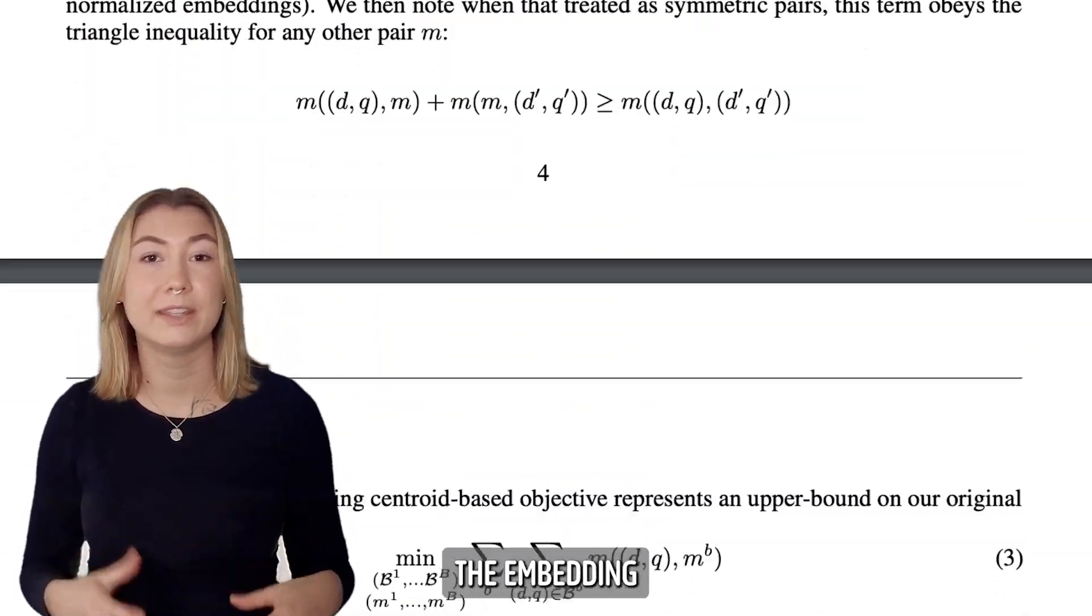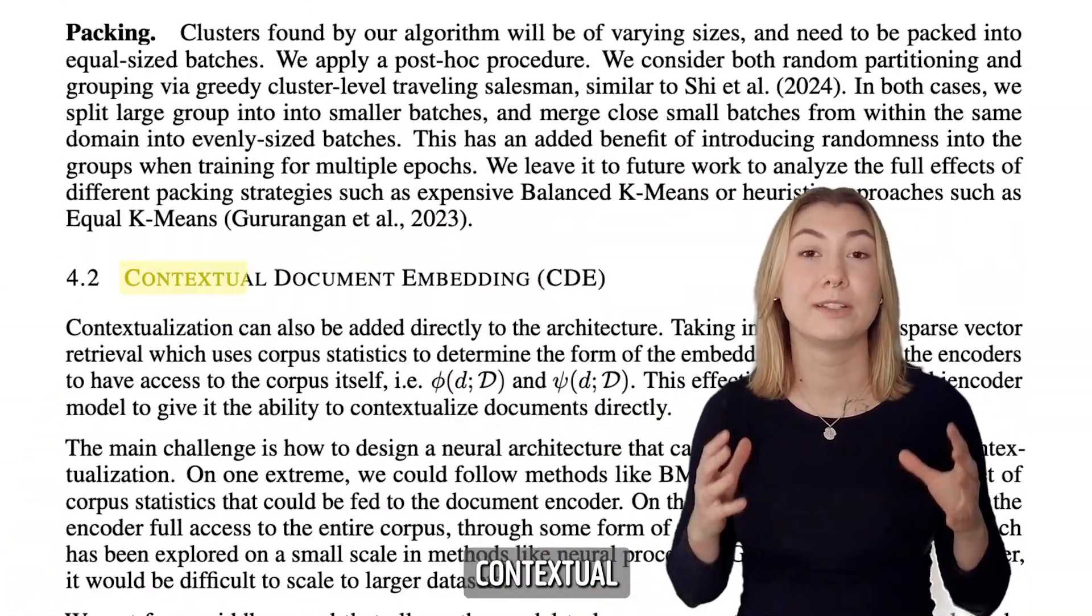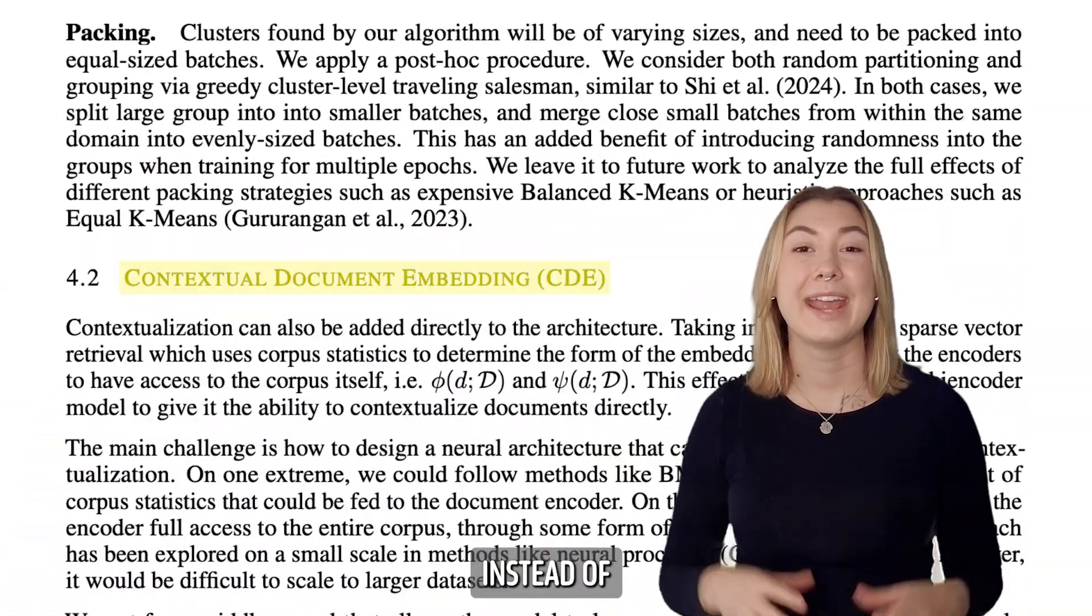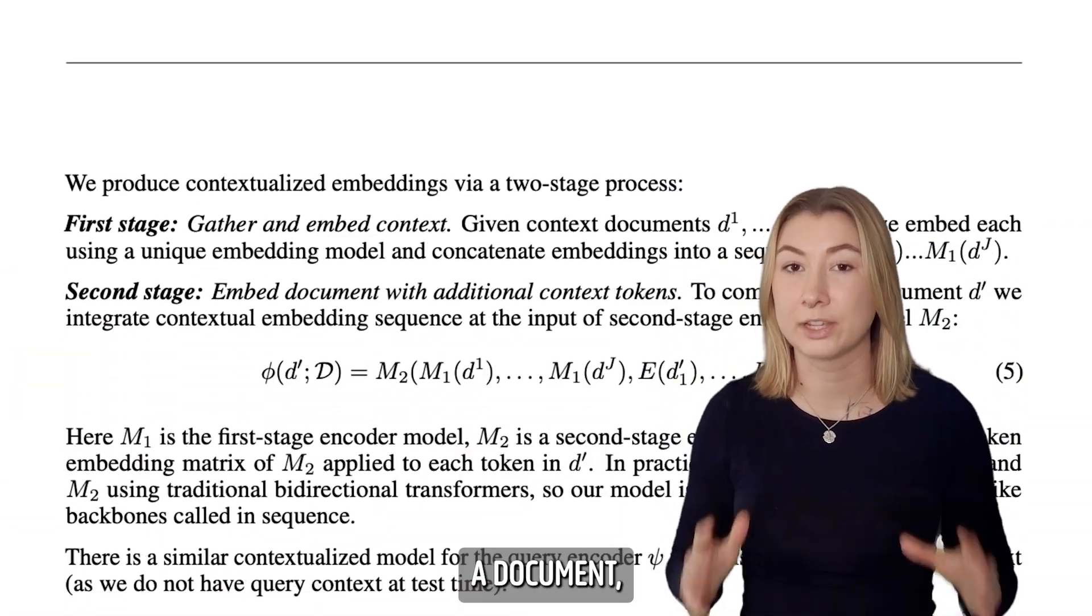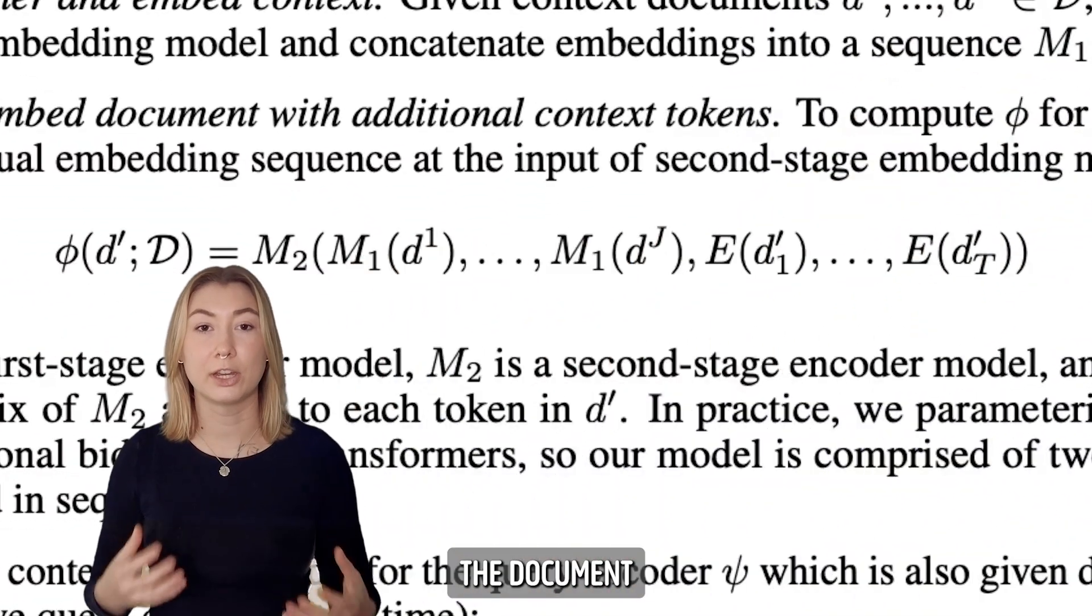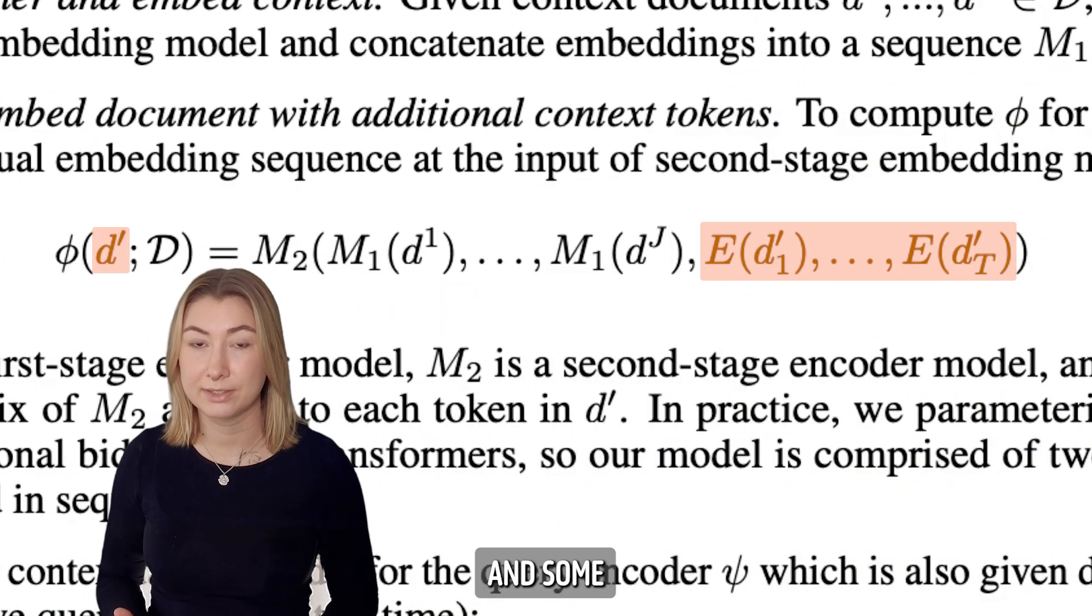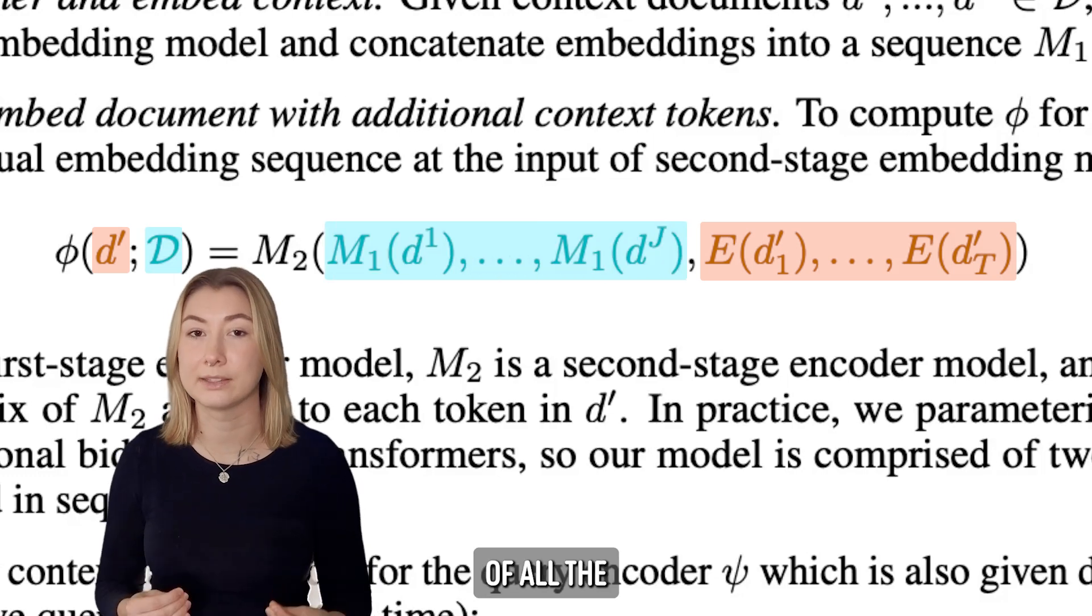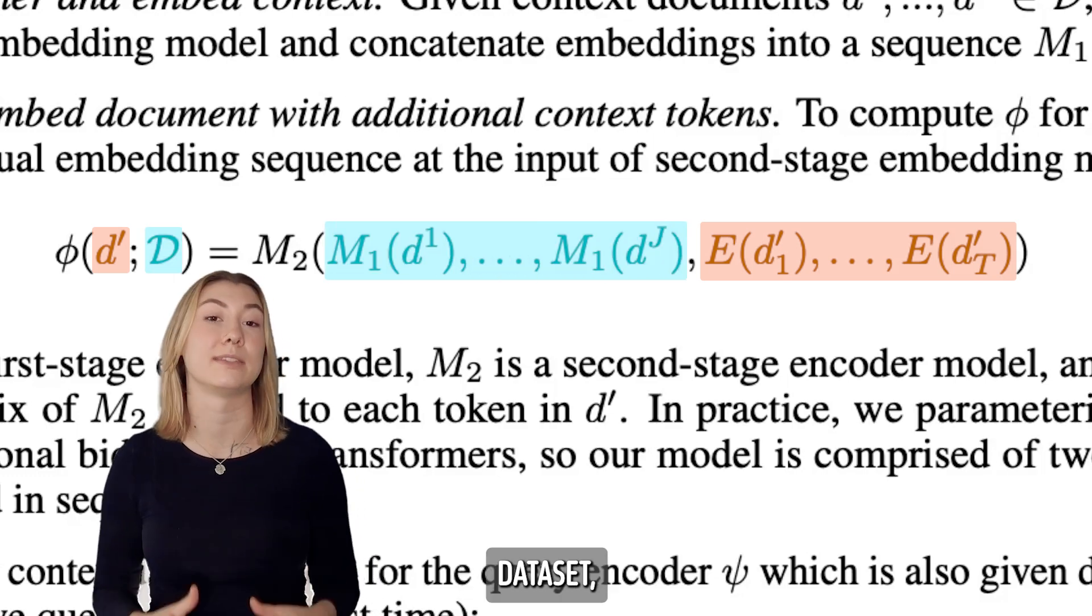The authors also propose to modify the embedding function itself, calling this method contextual document embeddings. Instead of being dependent on only a document, it has two arguments: the document with token-level representations, and some pre-calculated embeddings of all the other documents in the dataset, or M1.